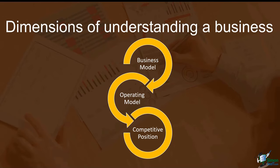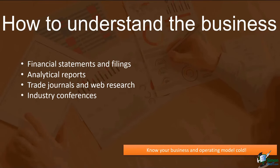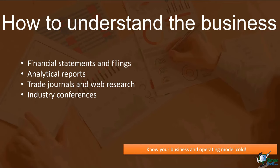How do you understand the business? My suggestion is: do whatever it takes to get a solid hold on your company's business model, operating model, and competitive positioning. You can start off by reading the company's financial statements and filings. You can also get copies of all operational and analytical reports, read trade journals, websites, and analyst reports, and attend or follow industry conferences. Most importantly, you need to know your business and operating model cold. With your newly acquired knowledge of the three dimensions in hand, you are ready to put them into work in your upcoming efforts to form and create your financial forecast.